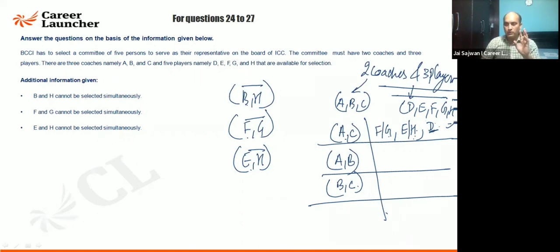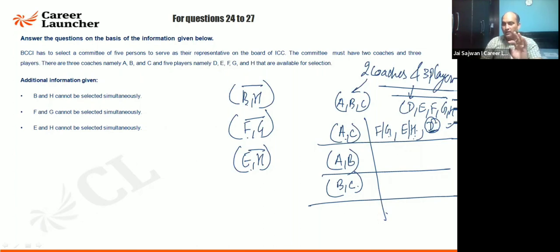This gives four combinations for the AC coach case: F, E, D; F, H, D; G, E, D; G, H, D. These are the combinations when coaches AC are selected.